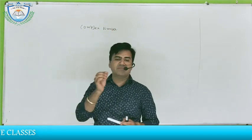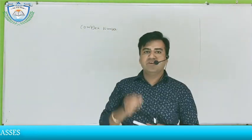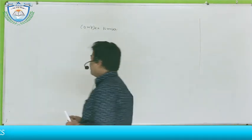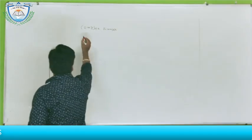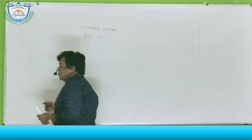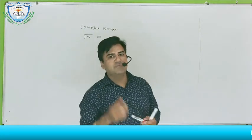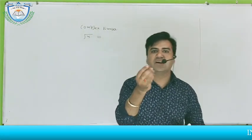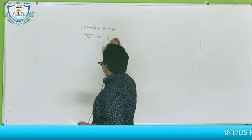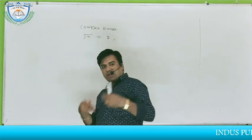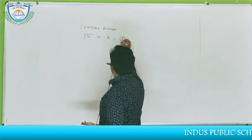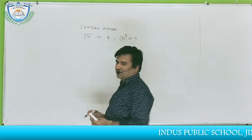Before learning about complex numbers, first of all let us take a small concept of square root. Suppose I am asking you: what is the square root of 4? Everyone's answer will be 2, because if you square 2, you get 4. Similarly, the square root of 9 is 3 because 3 squared equals 9.